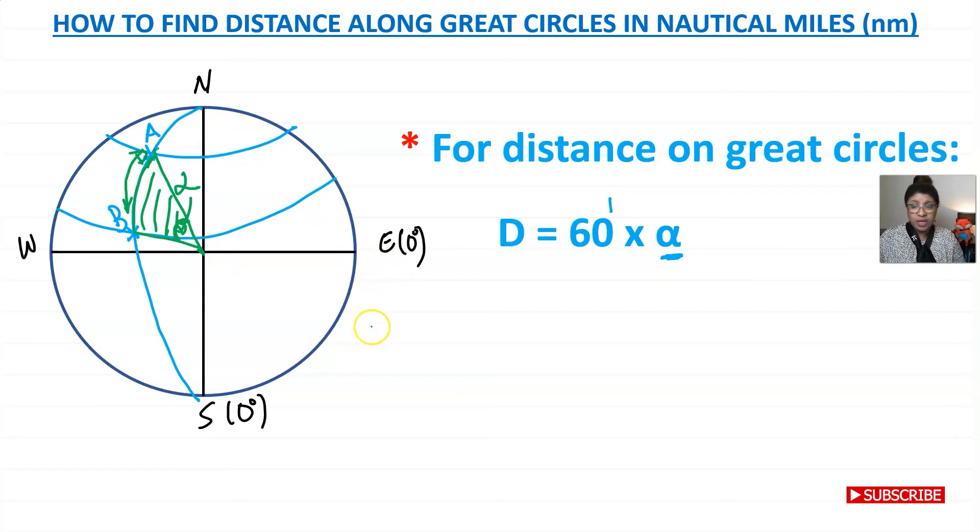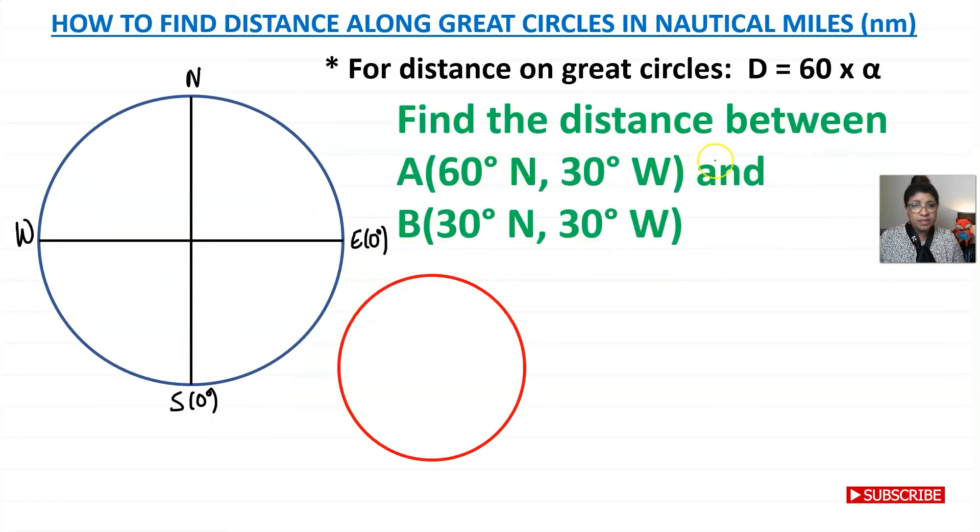Now let's do an example. Find the distance between point A, which is 60 degrees north and 30 degrees west, and point B, which is 30 degrees north, 30 degrees west. So we can see they are on the same great circle because they are both on 30 degrees west.